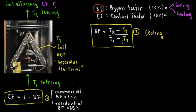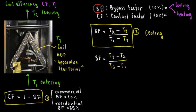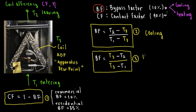For heating purposes, we just switch the equation. The bypass factor equals the apparatus dew point temperature T3 minus T2, divided by T3 minus T1. That's formula number 3, for heating purposes.